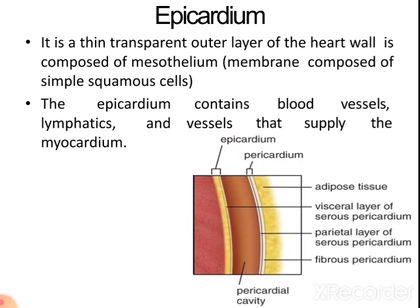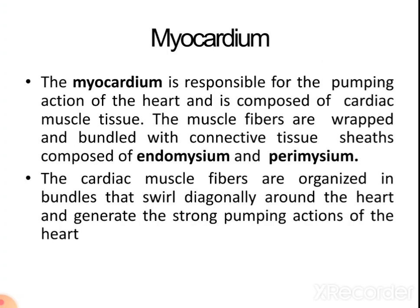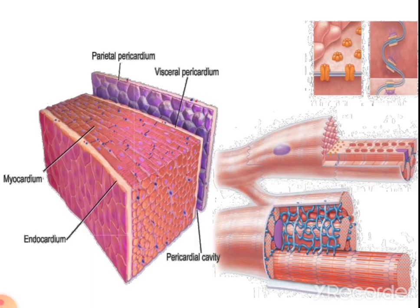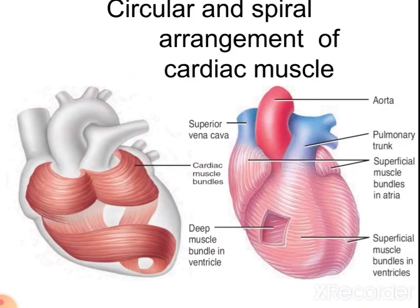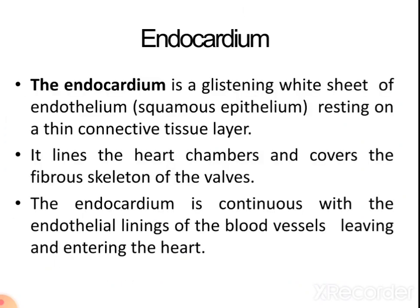The epicardium is a thin transparent outer layer made up of mesothelium — simple squamous cells — and contains blood vessels, lymphatics, and vessels that supply the myocardium. The myocardium is responsible for the pumping action of the heart, made up of cardiac muscle fibers arranged in circular as well as spiral patterns. The endocardium is a glistening white sheet of endothelium resting on a thin connective tissue layer; it lines the heart chambers, covers the fibrous skeleton of the walls, and is continuous with the endothelial lining of blood vessels.